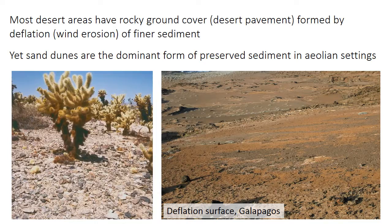It's also important to note that most desert areas are actually rocky surfaces and not sand dunes. These desert pavements, as they're called, are formed by wind erosion, also called deflation, and therefore there's something called deflation surfaces in the sedimentary rock record. But because deflation surfaces are sites of erosion, they don't make up much of the sediment column or the sedimentary record thickness. Instead, sand dunes make up the vast majority of the preserved sediment thickness, even though they weren't the most extensive area in the original environment.